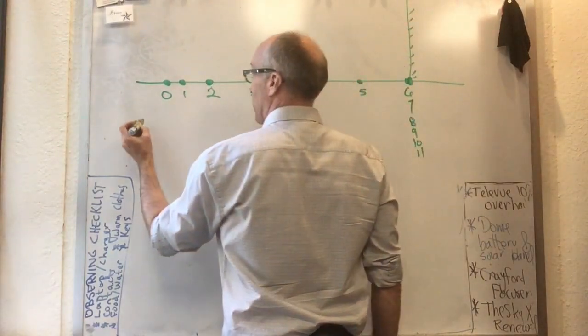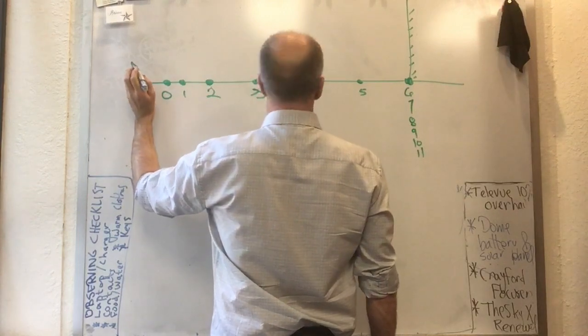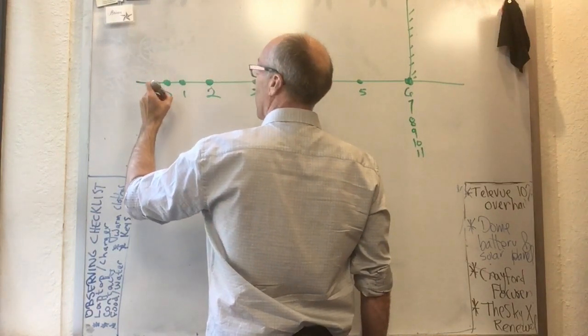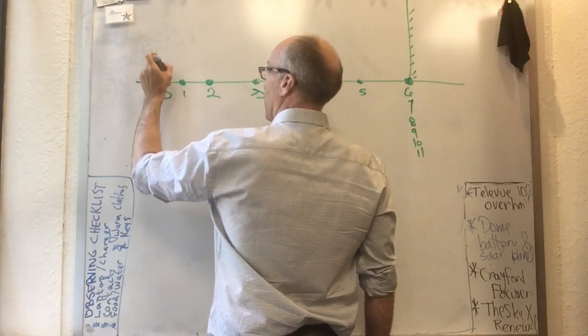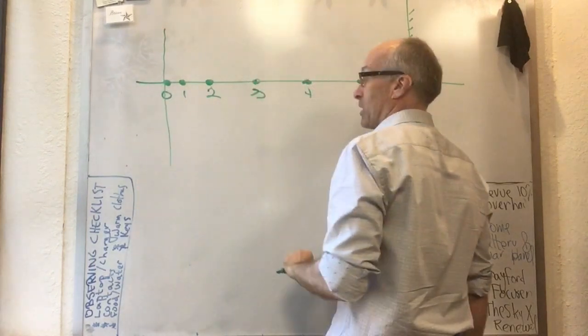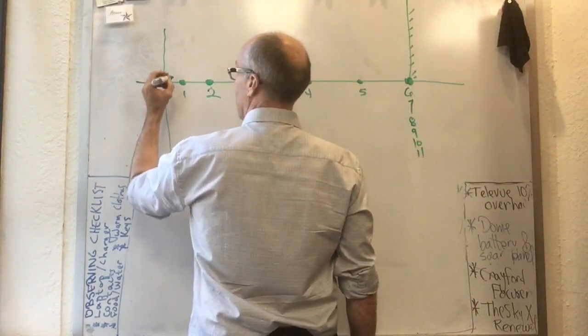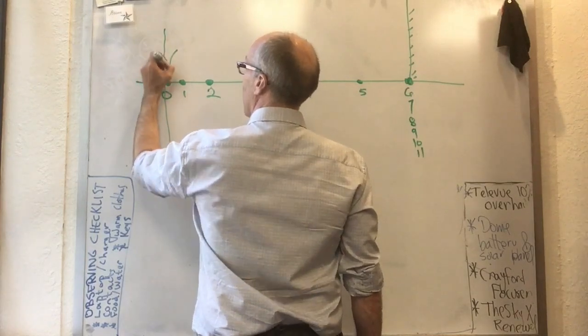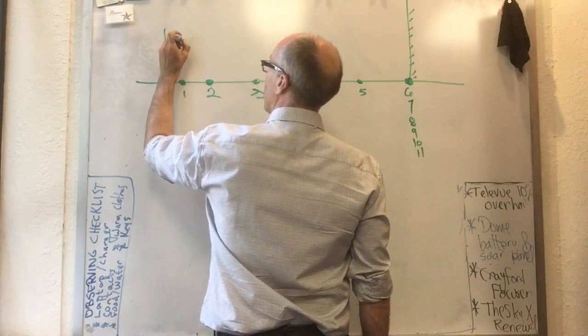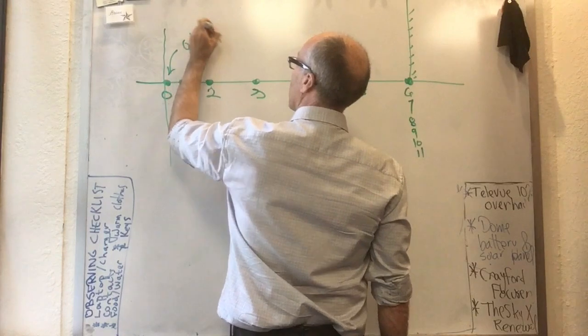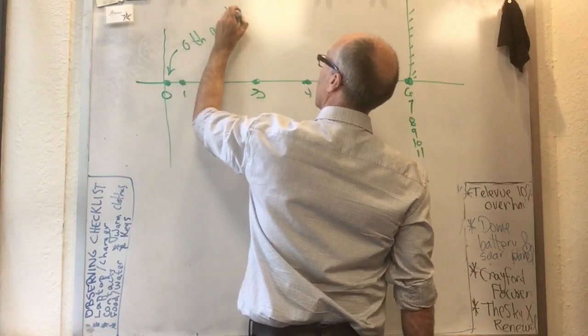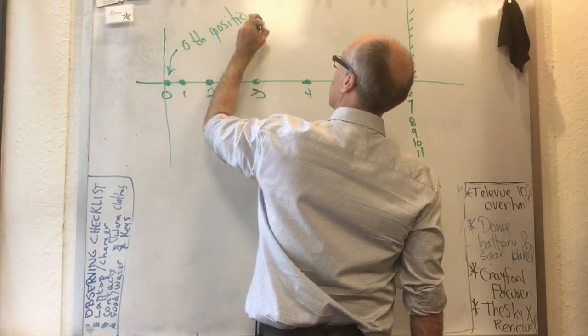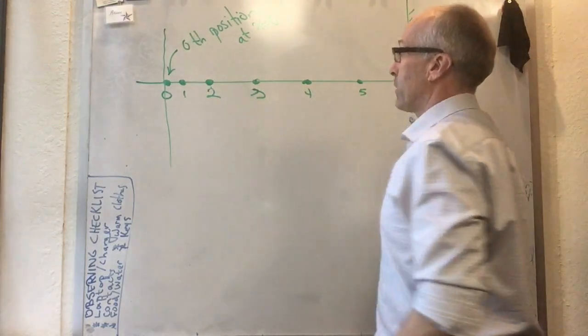Okay, so that would be an example of motion in one dimension. Of course we can set up the coordinates and we can be nice and set them up in the direction that Knight did. We can even set up the coordinates so that the zeroth position is at x equals zero. So this could be the zeroth position at x equals zero. That might be nice of us.